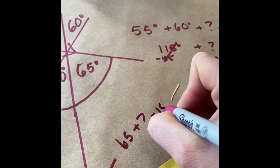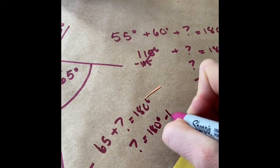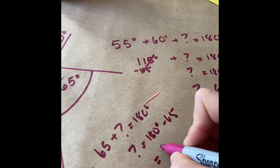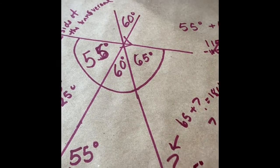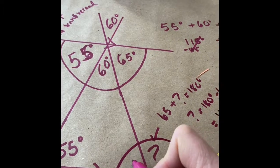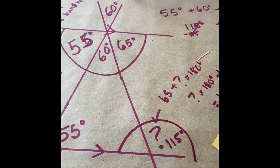180 minus 65 is equal to, mental math, 115. So right here is 115 and then I could draw another protractor and I could find this angle right here because I know that those are supplementary as well.